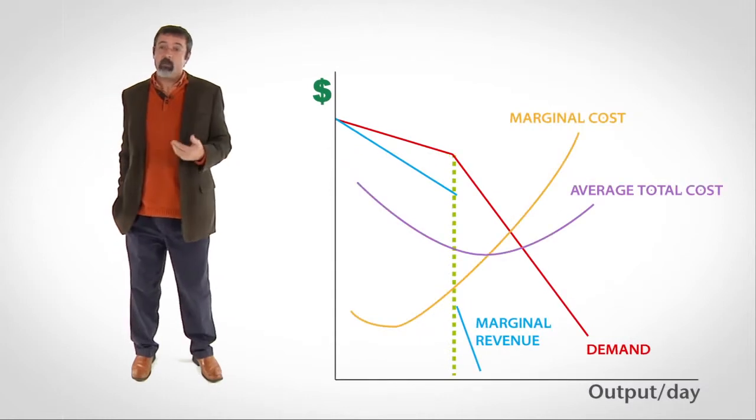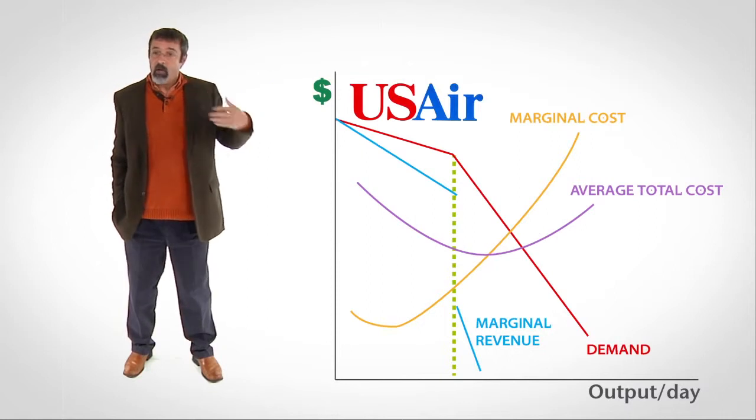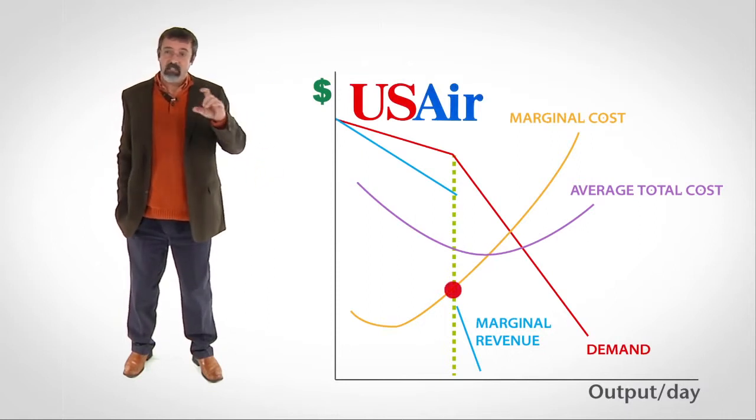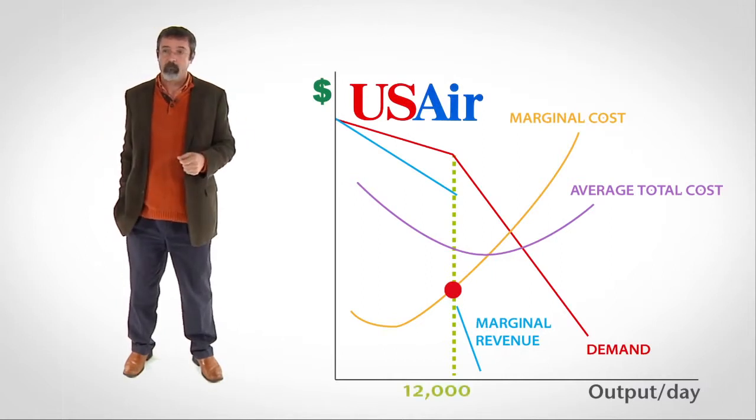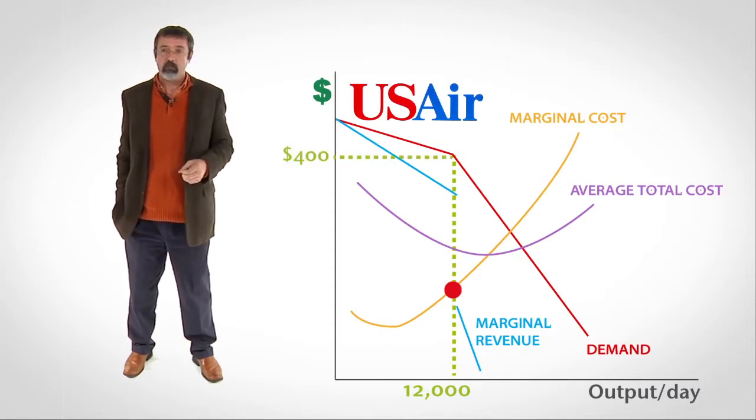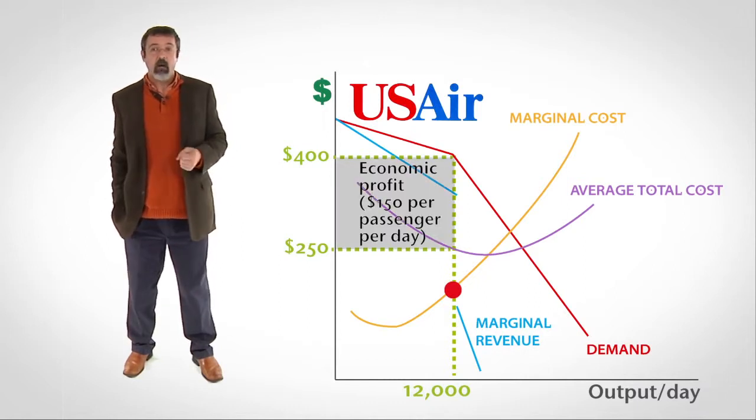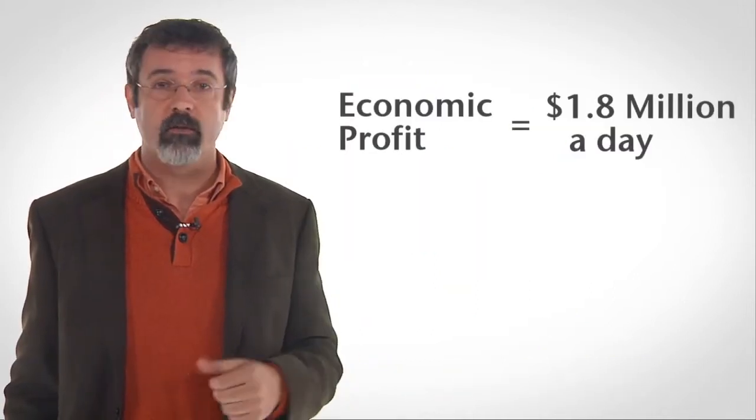Here's a typical oligopoly firm. Let's call it U.S. Airways. The firm's profit-maximizing output quantity is where MR and MC intersect, or twelve thousand passengers per day. The price the firm charges is four hundred dollars per seat, its average total cost is two fifty per seat, and it's earning an economic profit of one fifty per passenger per day, or one point eight million dollars a day.